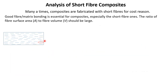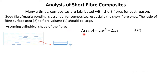If we look at a single short fiber, L is the length of the fiber and 2r is the diameter, so r is the radius. Assuming a cylindrical shape, the exposed area of one individual fiber is 2πr² plus 2πrL. The term 2πr² accounts for the two flat circular ends, while 2πrL is the curved surface area (circumference 2πr multiplied by length L). This gives the total surface area of this cylindrical short fiber.